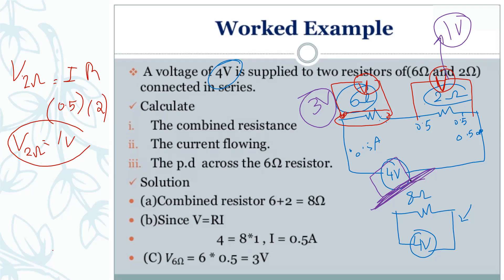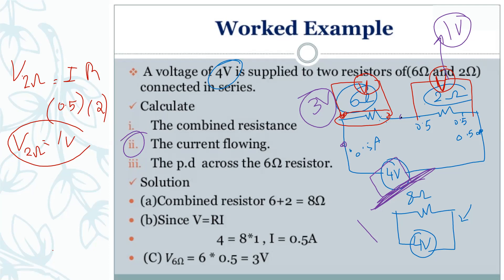To find the current, you use the simplified circuit with the combined resistance. With V and R known, it is easy to find I. After finding the current — since the current is the same everywhere — you go back to the original circuit and find the voltage at each point using that same current.